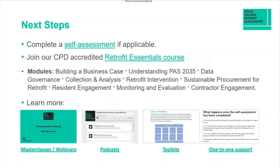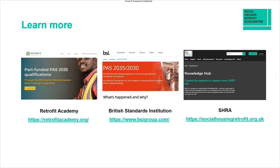For next steps, one-to-one support is available for eligible organisations or consortia. You can access a range of materials including the Retrofit Essentials course, which is a fantastic course covering modules around PAS 2035, data governance, range of interventions, procurement engagement and contractor engagement. You can also learn more through a range of online websites including the Retrofit Academy, which has fantastic content including access to qualifications for retrofit. The BSI website — British Standards Institution — has a range of standards available to review. And finally, the SRA at socialhousingretrofit.org.uk is a great source of access to a range of retrofit support.